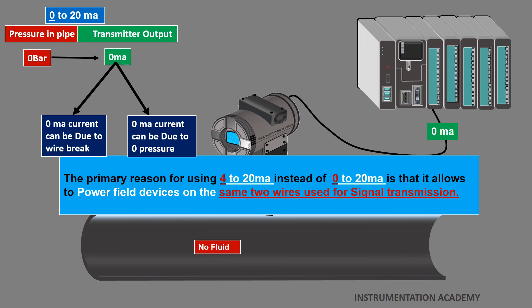While using 4 to 20 mA current signal, since there will be at least 4 mA flowing through the loop, the connected instrument can be powered using the same two wires that transmit signals.